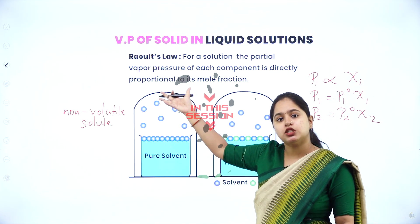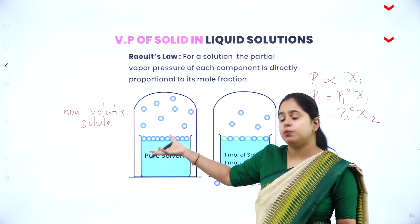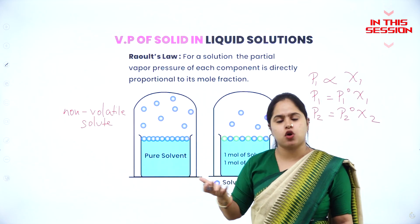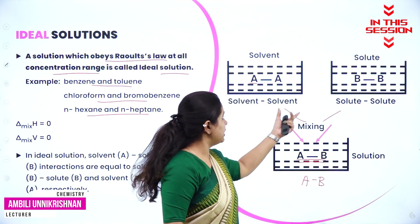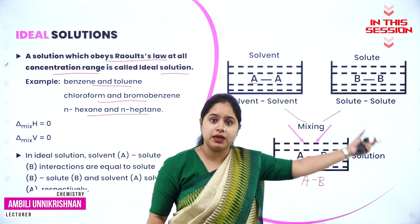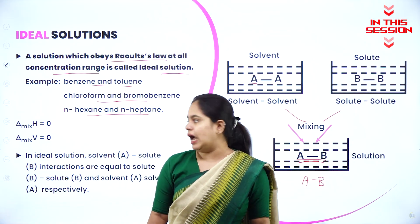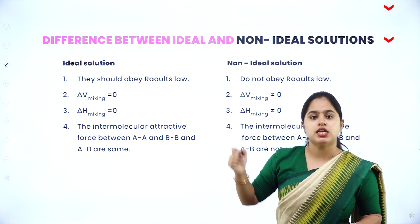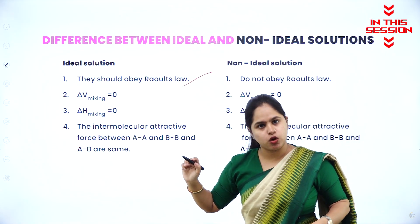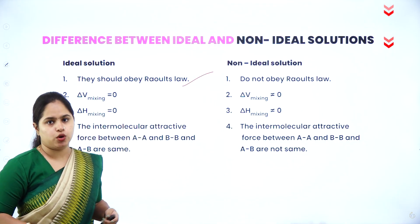This liquid changes into vapour phase and the pressure exerted by the vapour phase on the liquid is called vapour pressure. For ideal solutions, AA interactions and BB interactions will be equal to AB interactions as well. Ideal solutions obey Raoult's law; non-ideal solutions do not obey Raoult's law.